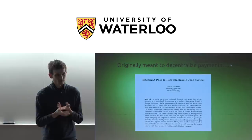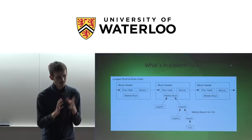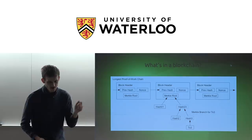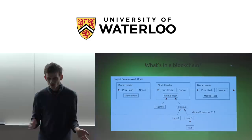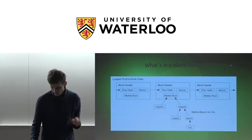The problem is how do you create a currency where you can't just copy money as much as you want, because information is so easy to copy. The approach Bitcoin took is that you have a decentralized network of a large number of computers. For a transaction to be valid, it doesn't just have to be a message sent from me to you — it also has to be broadcast onto the network and accepted by the network.